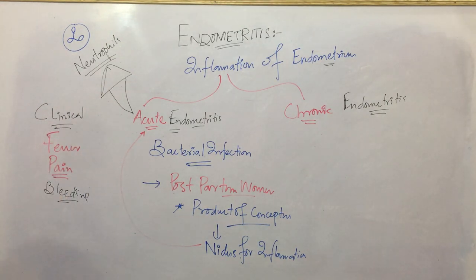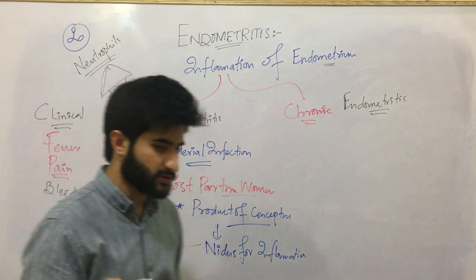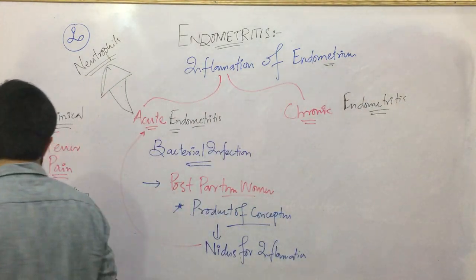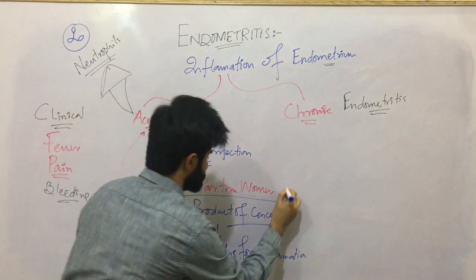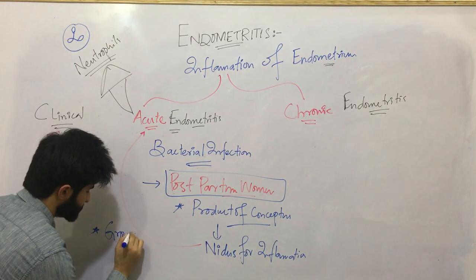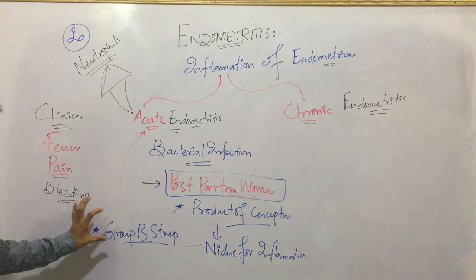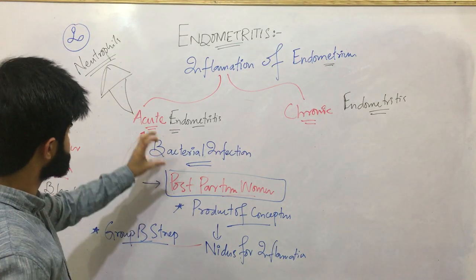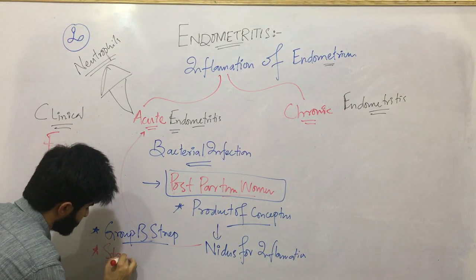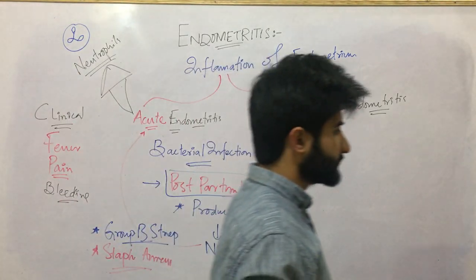The most common causative agent of acute endometritis can be either the normal vaginal flora or intestinal flora. Since this condition is mostly postpartum, the first organism that comes to mind is Group B Streptococcus — that is, Streptococcus agalactiae. Streptococcus agalactiae is the most common agent of postpartum acute endometritis. This can also be caused by Staphylococcus aureus.